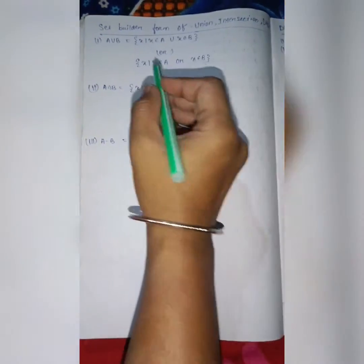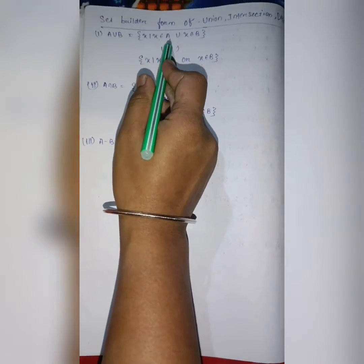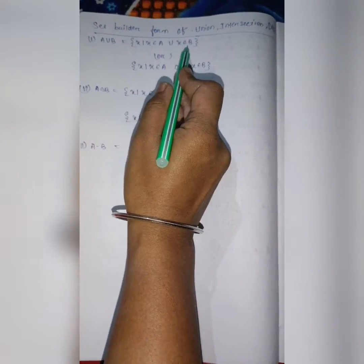A union B. In set build up form we write x source that x belongs to A, union x belongs to B.